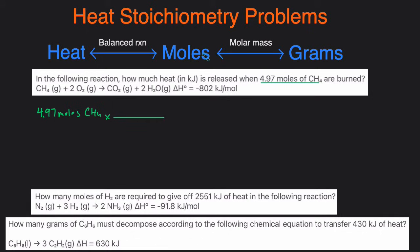We have moles and we want to get to heat, which is in kilojoules, so we just need to look at the chemical reaction. Whatever goes on top has to go on the bottom so it can cancel out. We'll put moles of CH4 on the bottom and whatever we're trying to get to will go on top — kilojoules. For the numbers we look at the reaction: we have one mole of CH4 and negative 802 kilojoules of heat. So we put negative 802 kilojoules on top, and then the moles of CH4 cancel out, leaving just the kilojoules.